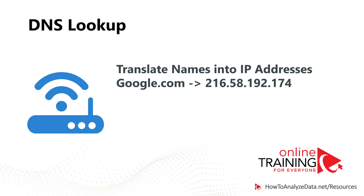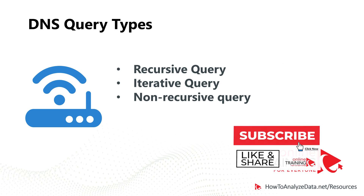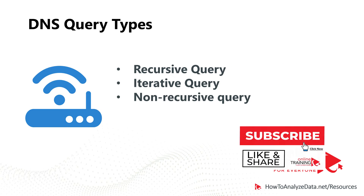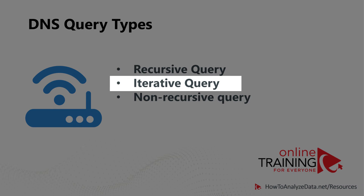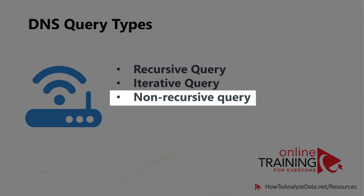The query to translate a website name into an IP address is only one type of query that DNS provides. In addition, DNS allows for recursive queries, iterative queries, and non-recursive queries.